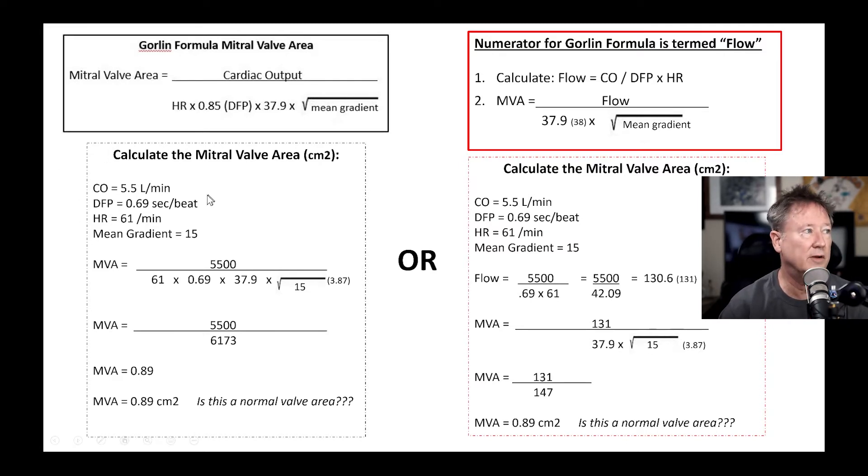But to show you that they're the same, no matter how you do it. So here's an example of a cardiac output of 5.5 liters. We have a DFP of 0.69, a heart rate of 61, a mean gradient of 15. So if we're going to go down this side of the equation, on the left side of your screen, we have 5.5 times a thousand or 5,500 CCs divided by the heart rate of 61. The DFP is 0.69, the constant 37.9, and then the square root of the mean gradient is 3.87. So 61 times 0.69 times the constant times 3.87 gives 6173. So 5,500 divided by 6173 gives a mitral valve area of 0.89.